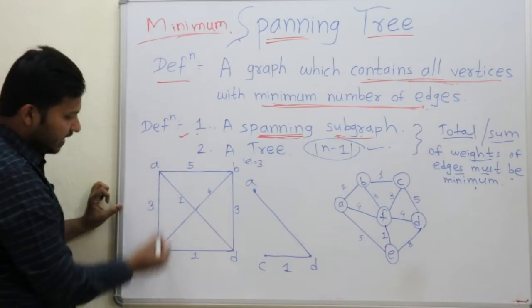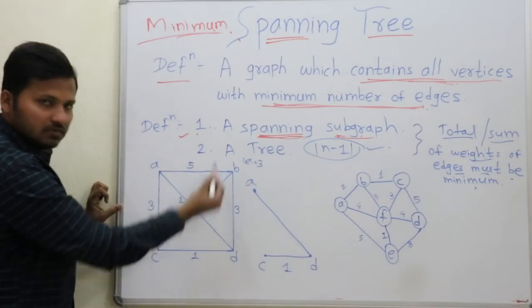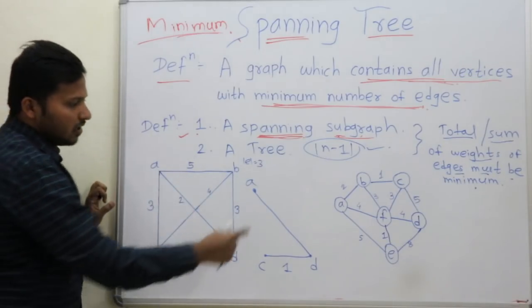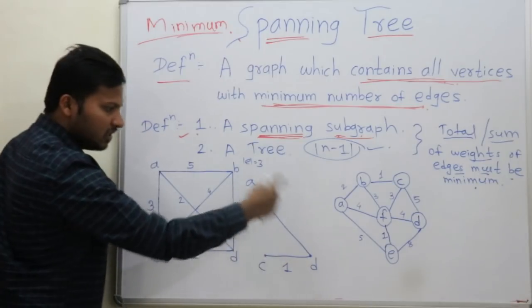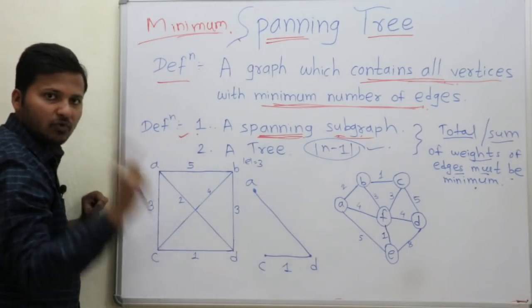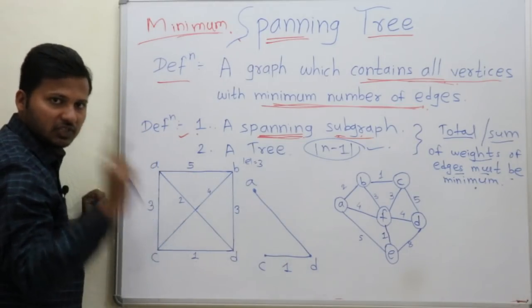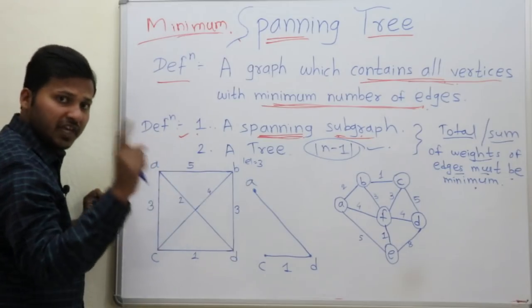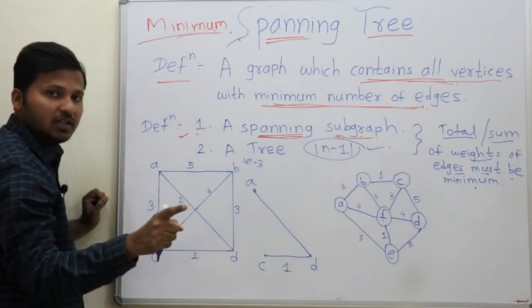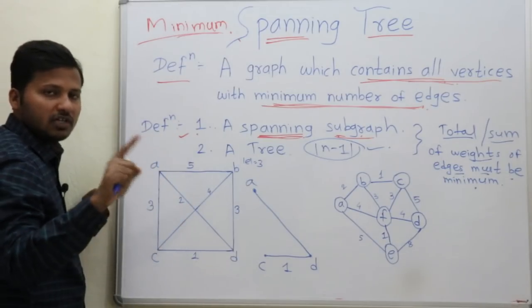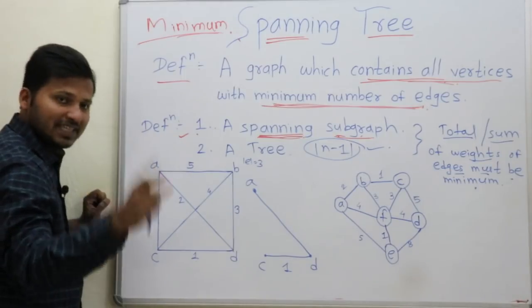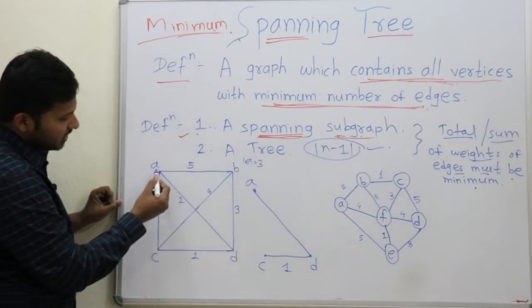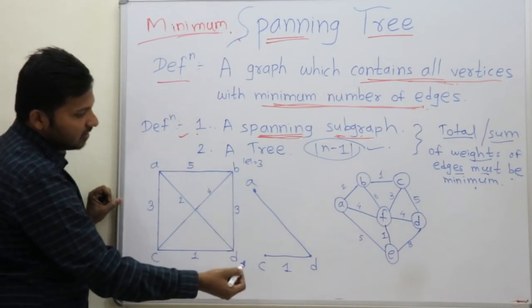You can take any one if it does not form a cycle. While forming this you have to always avoid edges which form a cycle — even if they are minimum weight, you should not take those edges because they form a cycle. So for this we have edges A-C and B-D both with weight 3.